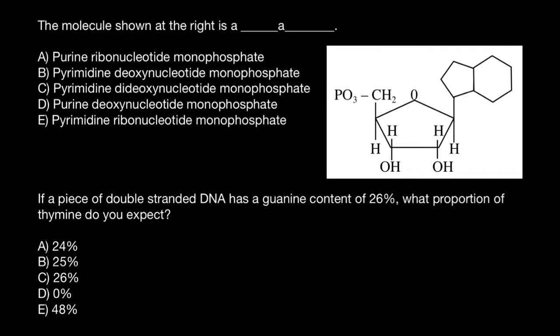When we read a name of the molecule, for example, purine ribonucleotide monophosphate, we move from the right part of this molecule to the left part, giving a name of this part, this, and then this.